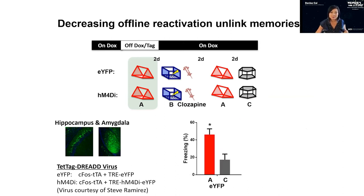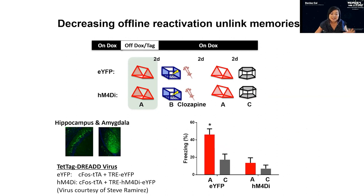In the control group, replicating our previous results, animals transferred fear from the shocked blue box to the red box, and this was specific — they did not generalize fear to a novel context. Critically, by selectively silencing the neural ensemble of the red box, we eliminated memory linking, and again they did not freeze to the novel context. This suggests that reactivation of the red context — and probably also the blue context — during the offline period is important for linking these memories.